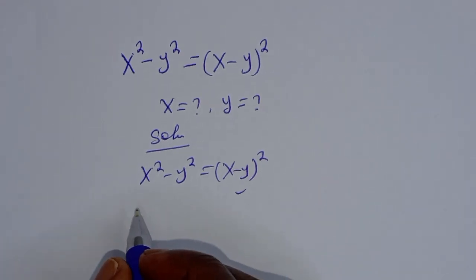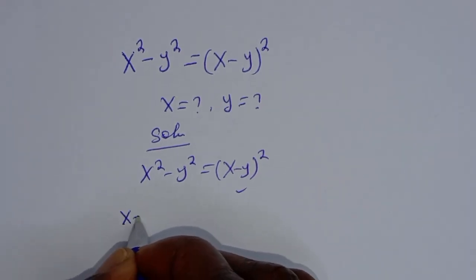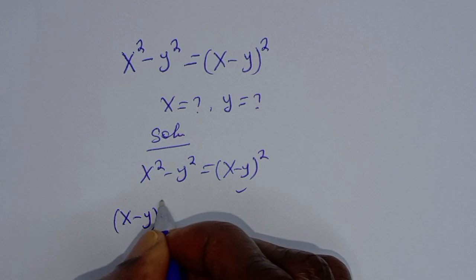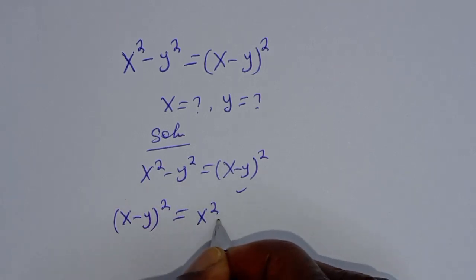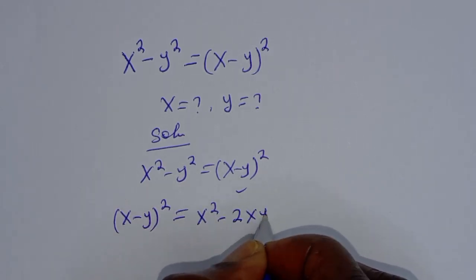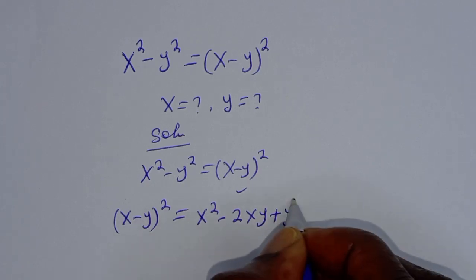Then from here we remember this rule that if you have x minus y squared, this is equal to x squared minus 2xy plus y squared.